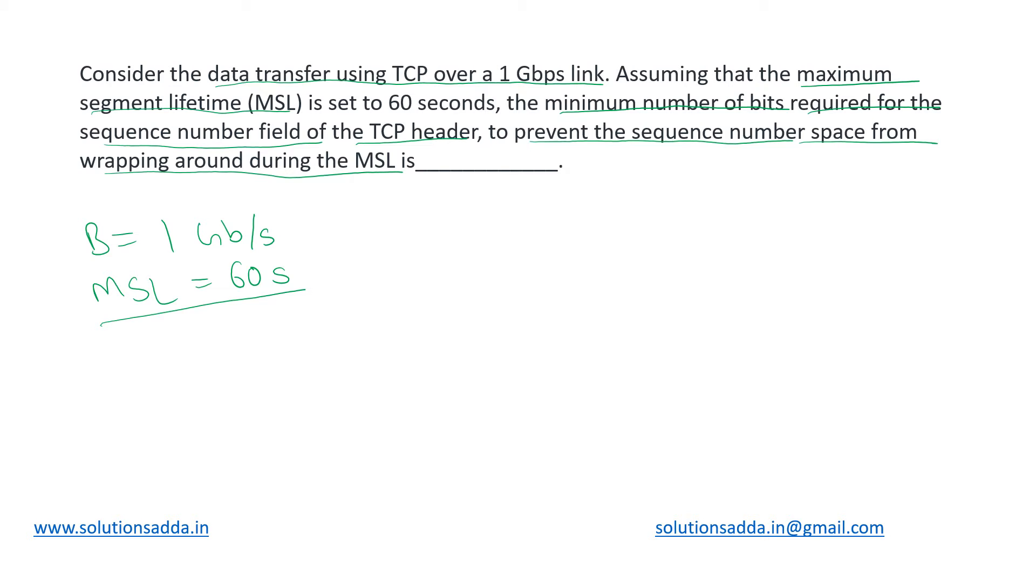So the minimum number of sequence numbers required for our segments are the number of them which are consumed during this MSL time. This will give us the total number of sequence numbers which we will need, and then based upon that we will calculate how many bits they will consume.